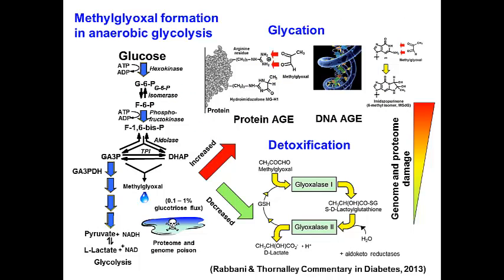The glyoxylate system metabolizes methylglyoxal. A main source of methylglyoxal is from degradation of triosephosphates in anaerobic glycolysis. About 0.1% of the flux through anaerobic glycolysis degrades spontaneously to methylglyoxal, so this is unavoidable in any biological organism that uses glucose for metabolic energy.